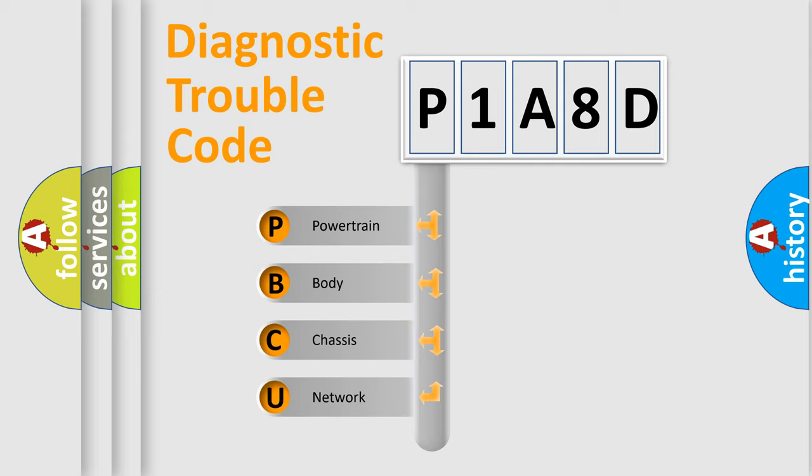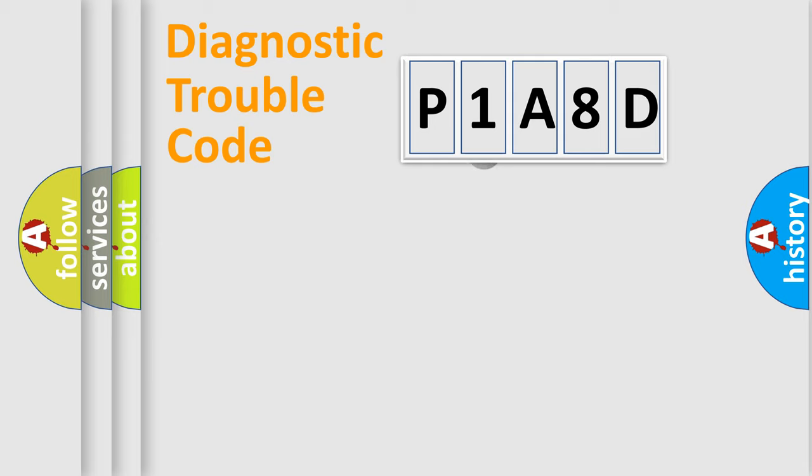We divide the electric system of automobile into four basic units: Powertrain, Body, Chassis, and Network. This distribution is defined in the first character code.